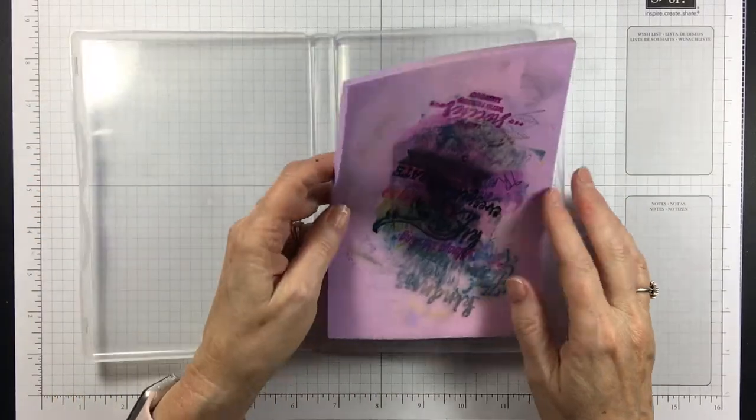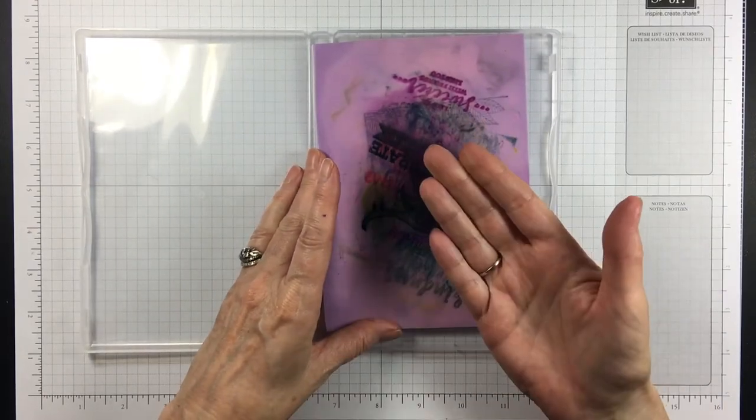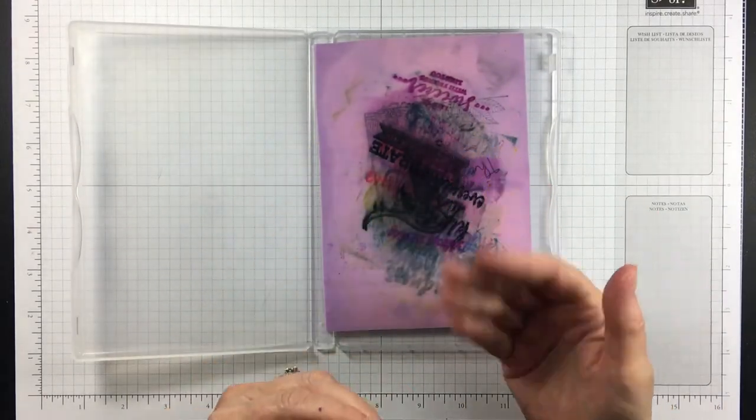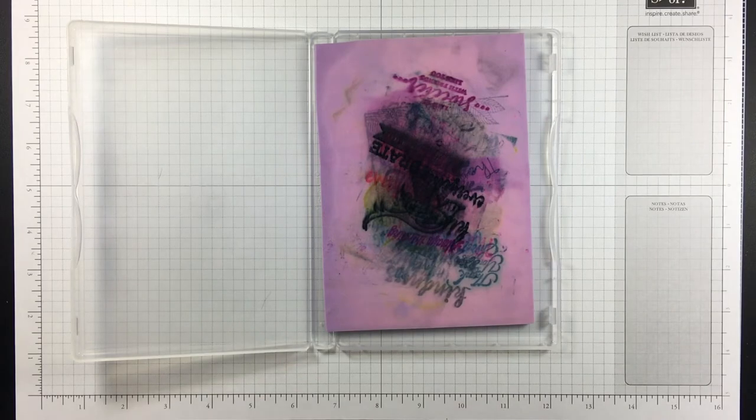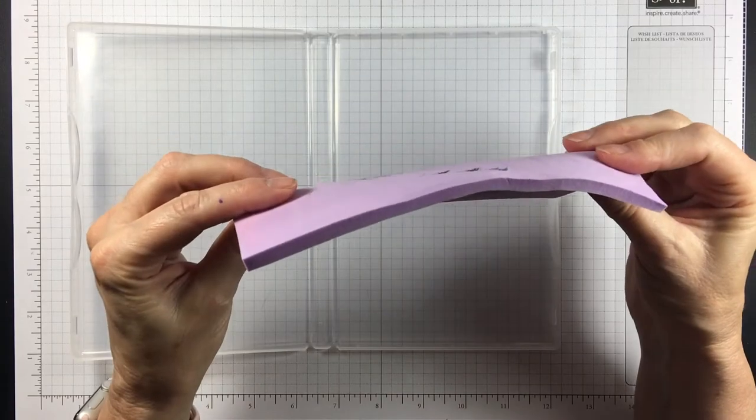And the really nice thing about it is that the ink does stain this, but it does not come off, which I love. It doesn't transfer to your fingers and it won't to your stamps. So it's very flexible. And as I said, it's thick.